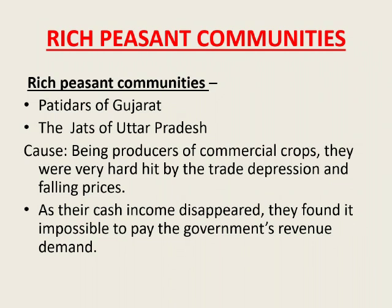We will discuss rich peasant communities — the Patidars of Gujarat and the Jats of Uttar Pradesh. Being producers of commercial crops, they were very hard hit by the trade depression and falling prices. As their cash income disappeared, they found it impossible to pay the government's revenue demand.